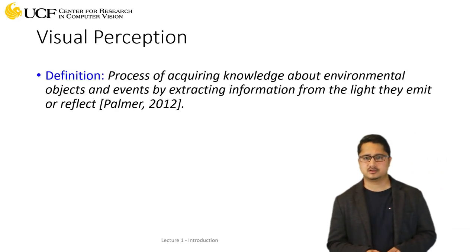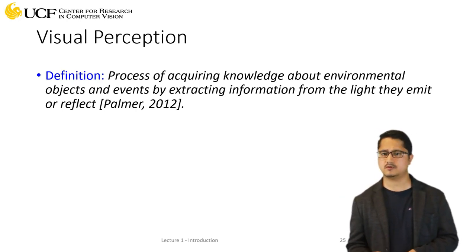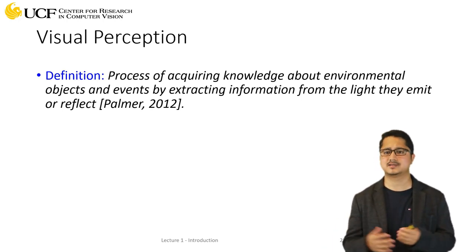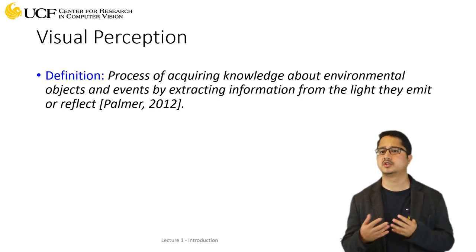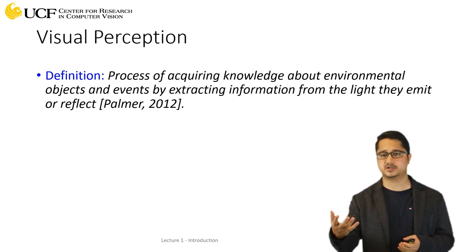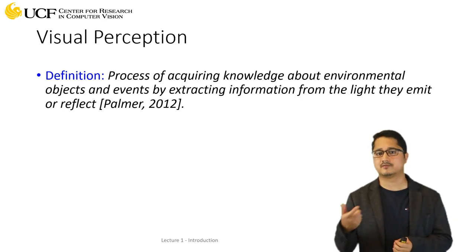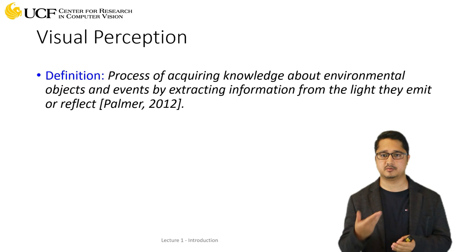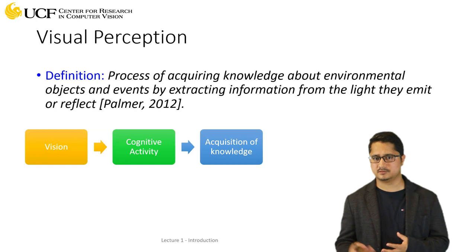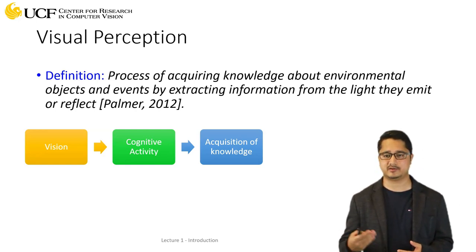Another interesting question is why objects present in a 3D environment appear to be colored. Let's understand the definition of visual perception. By definition, it's the process of acquiring knowledge about our environment. There may be different objects and different events happening, so we want to extract semantically meaningful information from these objects and events. Light emitted or reflected by these objects is actually used to perceive them and make interpretations about them. Visual perception involves multiple steps: first vision, then some cognitive activity, and then the acquisition of knowledge.